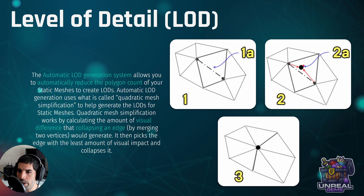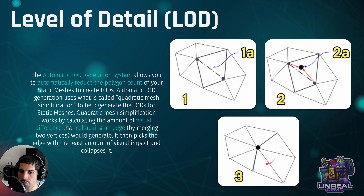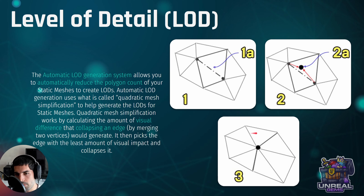Here you would see where the system is trying to place the new vertex, and then this is the final result which, as you can see, has fewer vertices and also fewer edges. You can see that the algorithm has recalculated how the polygons need to arrange in order to have a less detailed mesh, but trying to keep the highest quality possible.